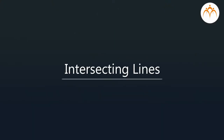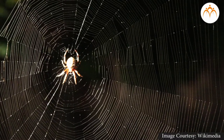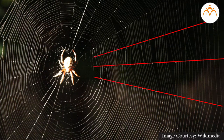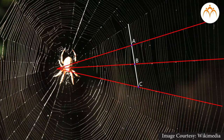Now you know what intersecting lines are, so let us look at the picture of a spider's web. These thin threads of web represent intersecting lines which intersect one another at a point. Can you see this line? It cuts these intersecting lines of the web at distinct points. This line represents a transversal. So you can see so many intersecting lines and transversals in a spider's web.